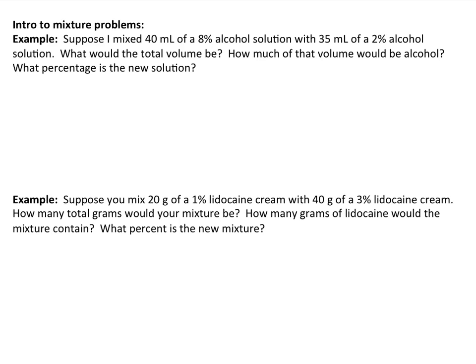Both of these examples are more beginning mixture problems. In the first example, I'm mixing together two solutions: 40 milliliters of an 8% alcohol solution and 35 milliliters of a 2% solution. The questions I want to answer are: what is the new volume going to be when I put them together? How much of that volume is going to be alcohol in milliliters? And what percentage of alcohol is this new solution?